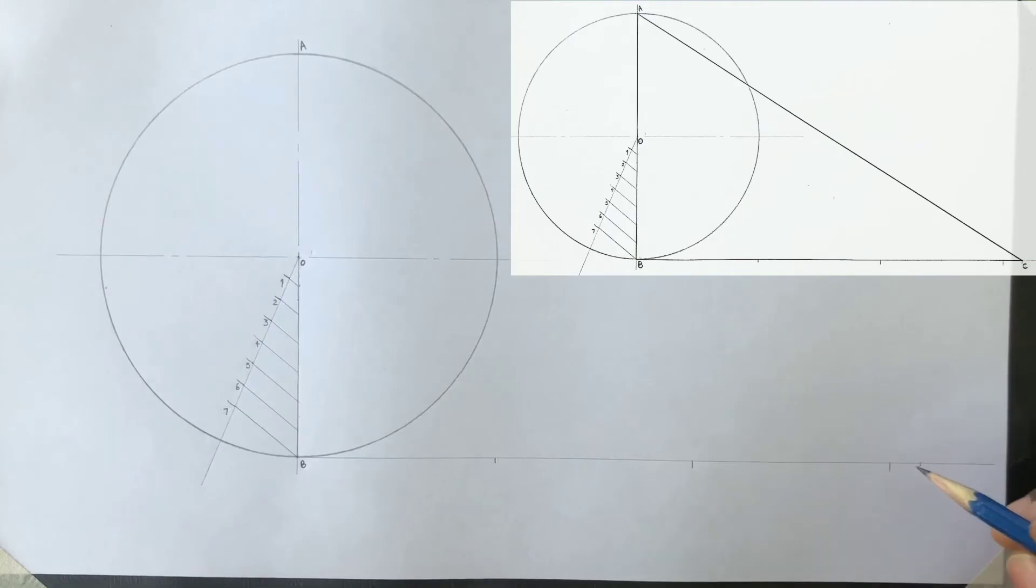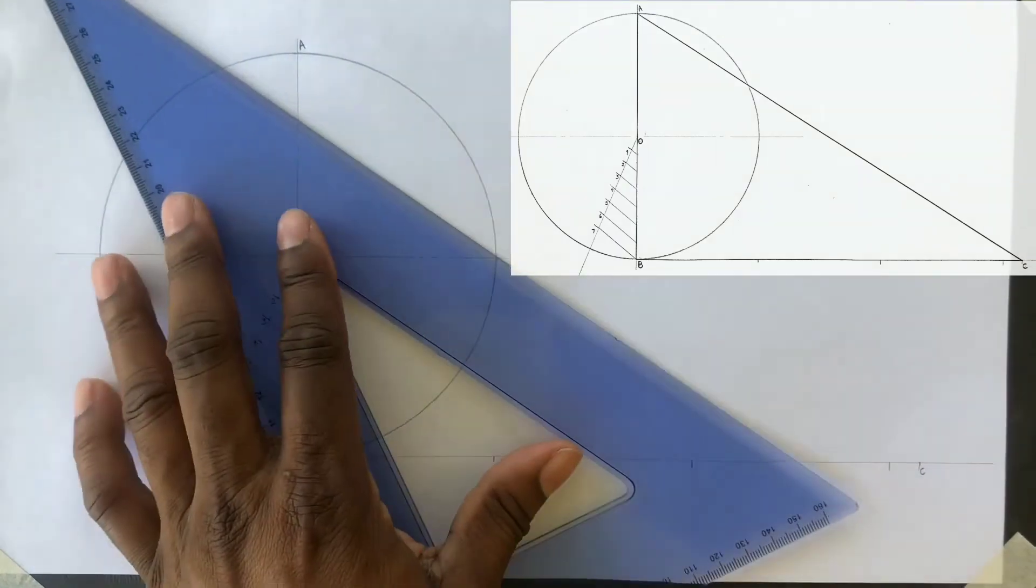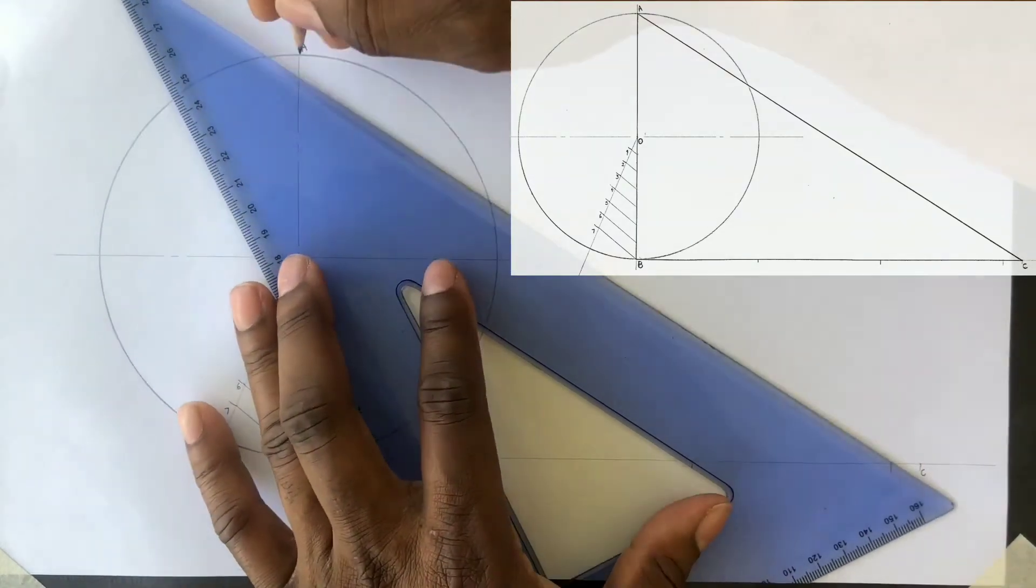Label this intersection C. Now draw a line from A to C.